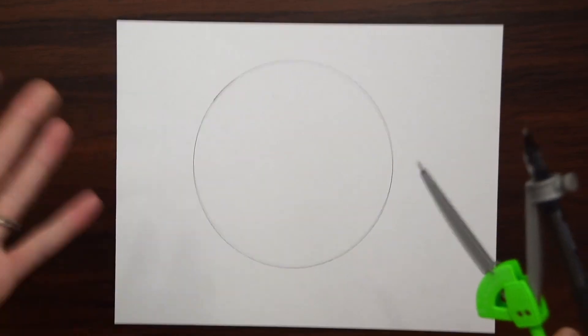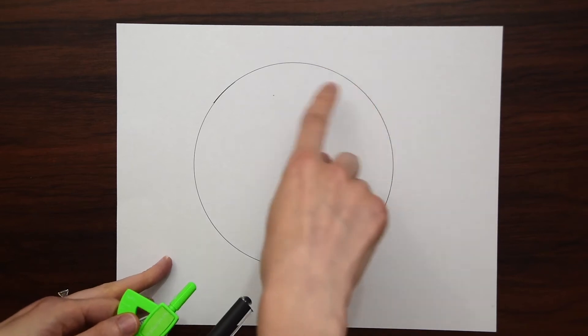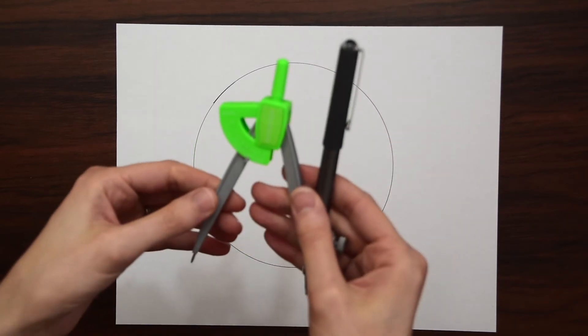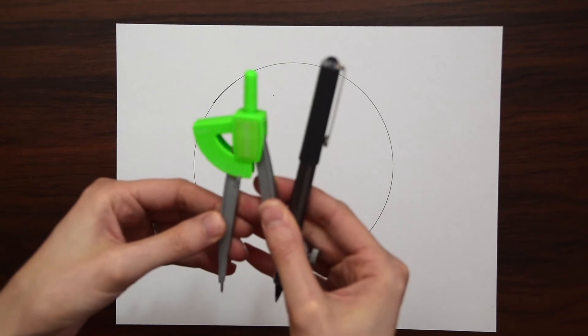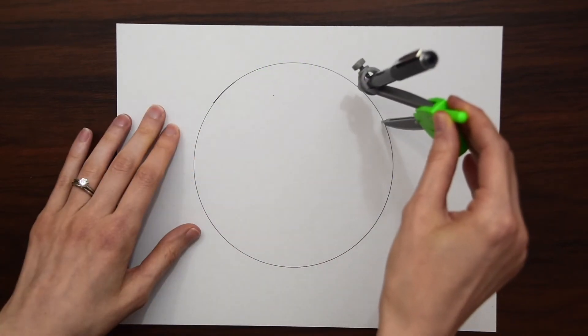Now that we have our circle, we're going to use the compass again to make little markings that are equally distant going all around the circle. We're going to go to the one centimeter mark and draw little marks going all around the circle.